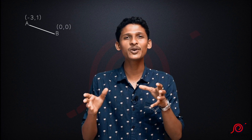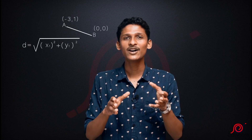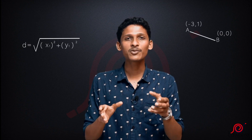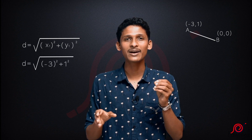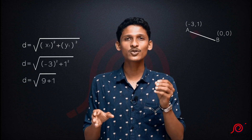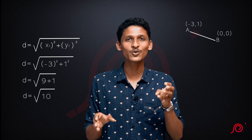We can look at the AB length. The A point is (-3, 1) and B point is (0, 0) — that is the origin. If one point is the origin, we use the formula: root of x1 squared plus y1 squared. Applying the values: root of (-3)² plus 1² equals root of 9 plus 1, that is root 10.